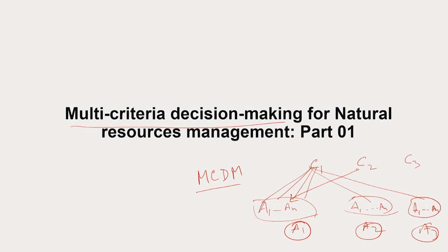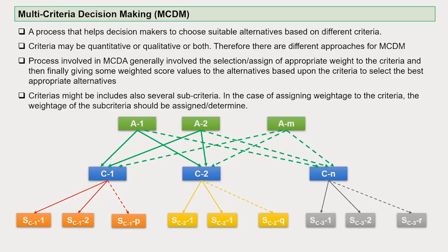MCDM helps us in finding the best possible combinations for better decision making for natural resources management. MCDM is a process which helps decision makers choose a suitable alternative based on different criteria — C1 to CN, any number of criteria. Criteria may be quantitative or qualitative or both, therefore there are different approaches used under MCDM. This process generally involves assigning an appropriate weight to each of these criteria and then giving weighted scores to the alternatives based on the criteria.